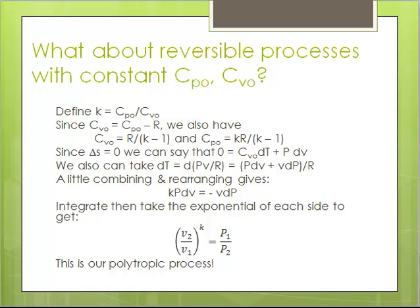In this video, I would like to look at polytropic processes for ideal gases. In the end of the last video, we looked at a reversible process that was adiabatic with constant C_P and C_V, so ΔS = 0.